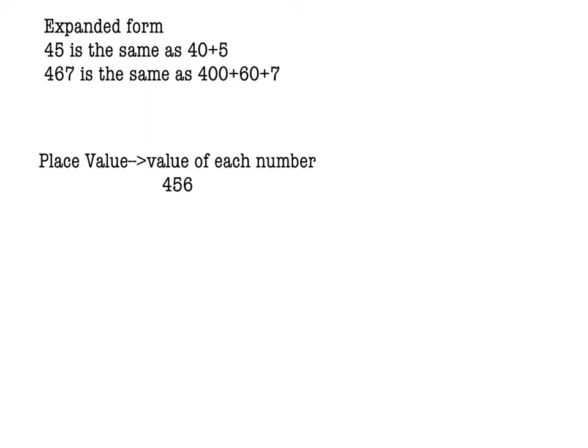So what we need to know is the expanded form. 45 is the same as 40 plus 5, or 467 is the same as 400, 60, and 7. The 4 is worth 400, the 6 is worth 60, and the 7 is worth 7.